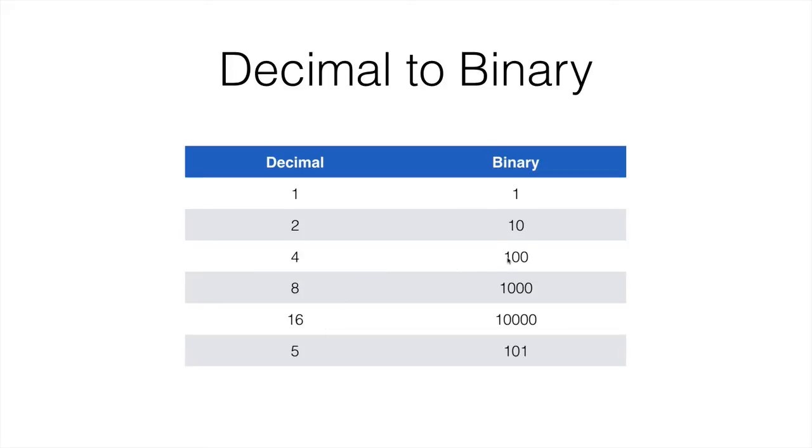So indeed if we have 100 and we add 1 to it, it comes here at the very right and that would be 5. So 101 would be 5.